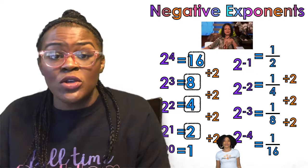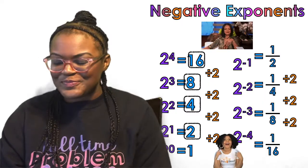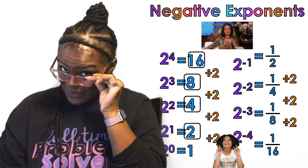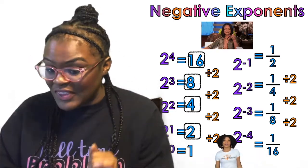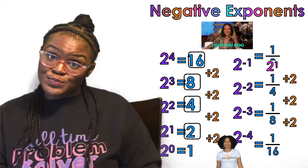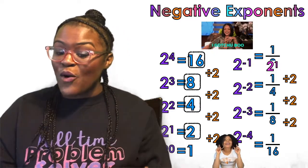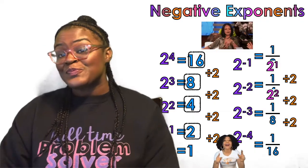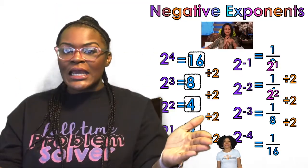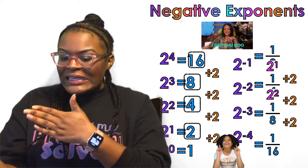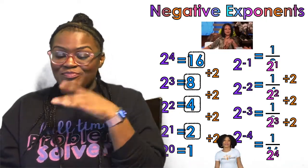You might be thinking: this pattern is cute, but I still don't understand why negative exponents become positive. Wait — what is the 2 on the bottom of one half? That's two to the first power. On the bottom of one fourth, 4 is two to the second power. On the bottom, 8 is two to the third, and 16 is two to the fourth. Do you see it now?